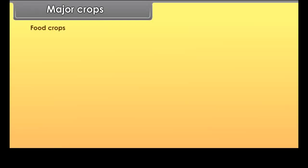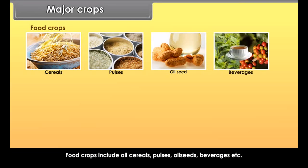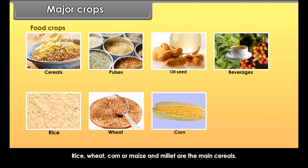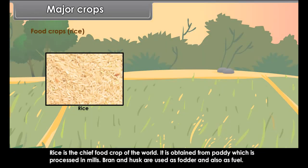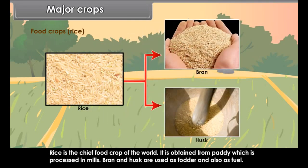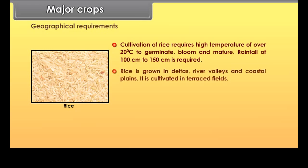Food crops include all cereals, pulses, oil seeds, beverages, etc. Rice, wheat, corn or maize and millet are the main cereals. Rice is the chief food crop of the world, obtained from paddy which is processed in mills. Bran and husk are used as fodder and also as fuel. Cultivation of rice requires high temperature of over 20 degrees Celsius to germinate, bloom and mature, and rainfall of 100 cm to 150 cm.